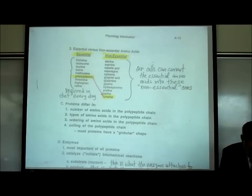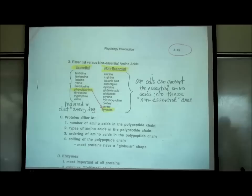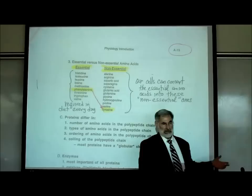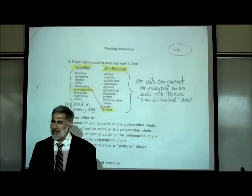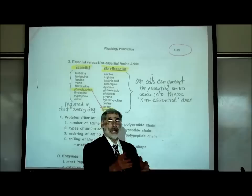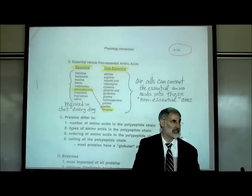On page A15, this is a listing of all 20 types of amino acids. We need all these amino acids in order to build the proteins in our body. Just like if you wanted to write sentences on a keyboard, you would need all the keys — all the letters — in order to type a sentence.